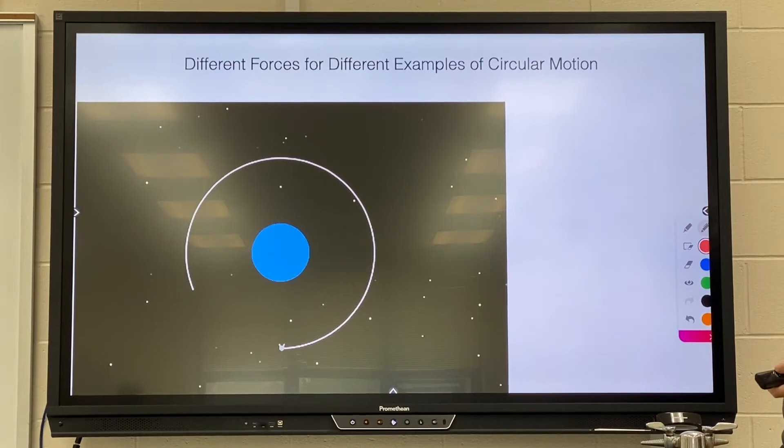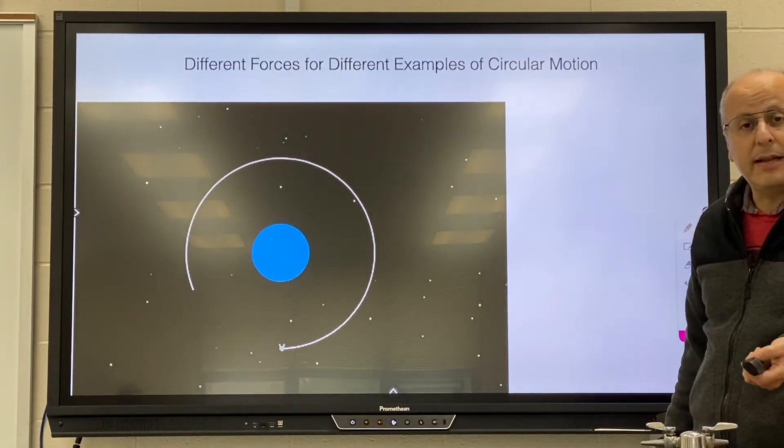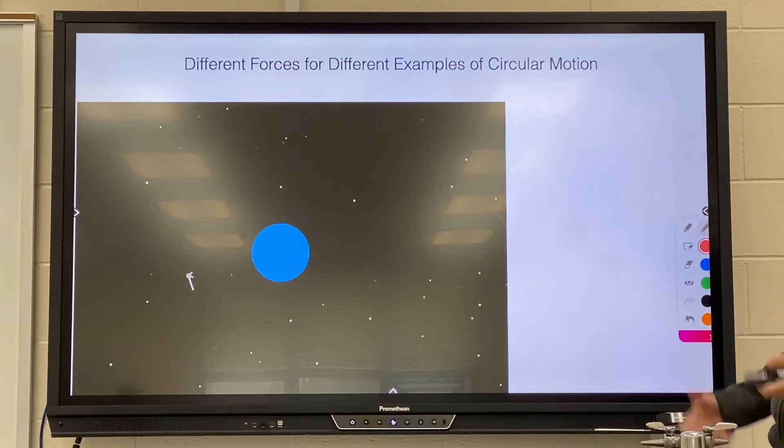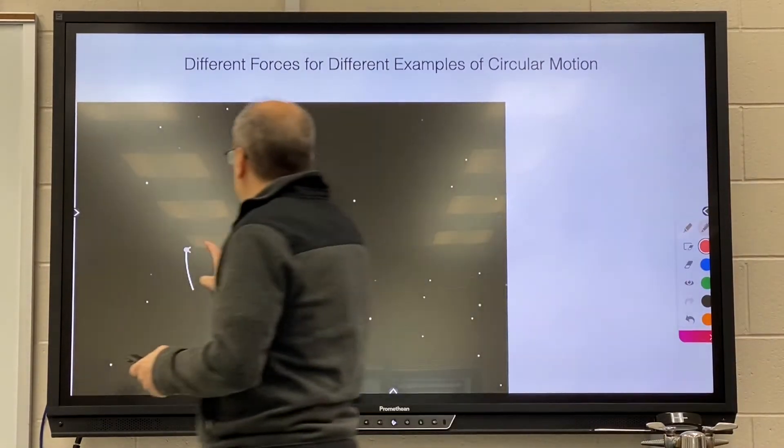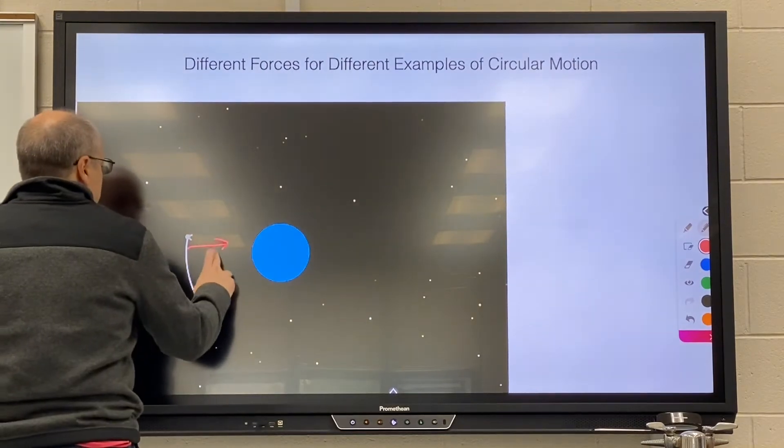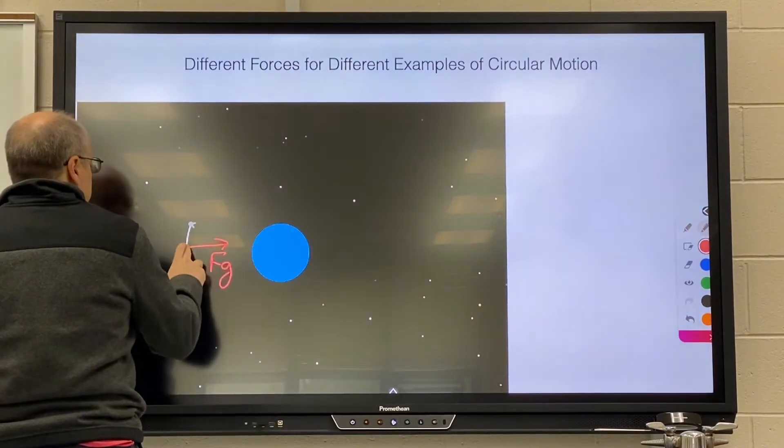Finally, if we have satellites going around the planet, a moon going around the planet, or a planet going around the sun or another star, we have force gravity pulling us toward the center.